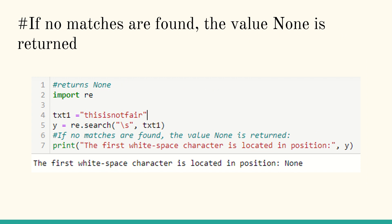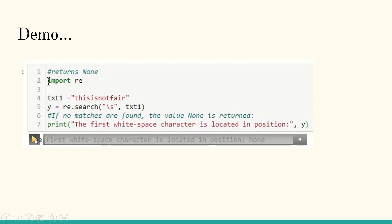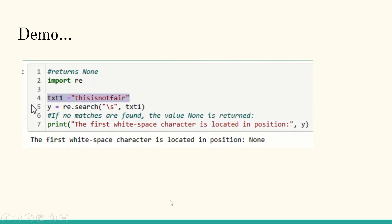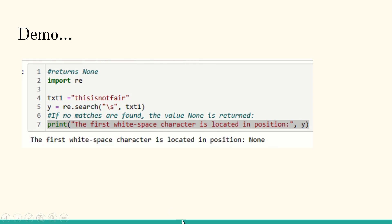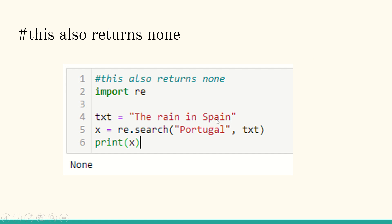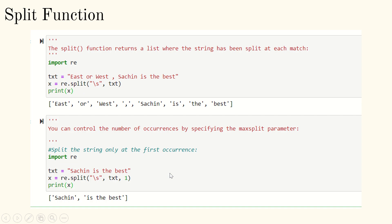If no matches are found, what happens? We use import re and text is 'thisisnotfairy' — re.search(r'\s', text1). There is no space in between, so it returns None. Additionally, if the text is 'the rain in the Spain' and I search for 'Portugal', since Portugal is not in the string, the search also returns None. If the search pattern is not available in the input string, it returns None.